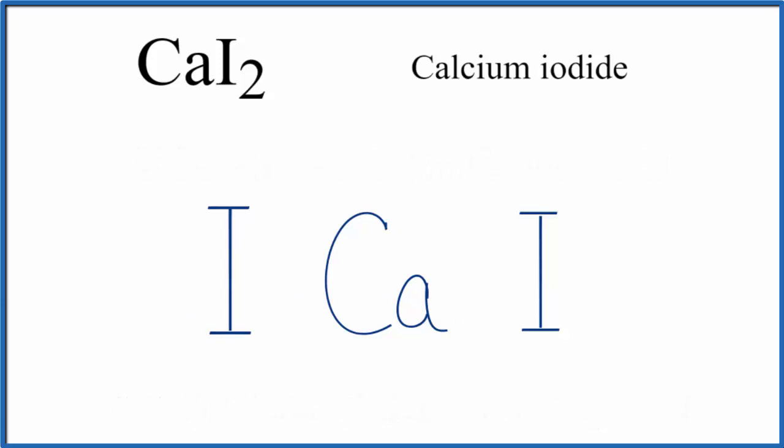So, calcium, group 2 on the periodic table, that means it has two valence electrons. And then iodine, that's in group 17, sometimes called 7A. That has seven valence electrons.